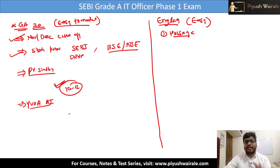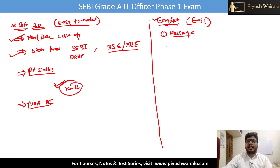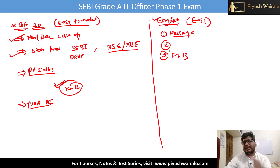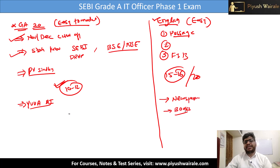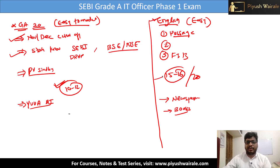If you observed our mock tests — two free mock tests and three in the paid course — English was on a similar level. There were questions requiring you to find the correct order, paragraph-type questions, and fill in the blanks. English is on the easier side; one can easily attempt 15 to 16 questions out of 20 in less than 10 minutes. Just have a reading habit — read a newspaper or any book — that is enough for the English section.